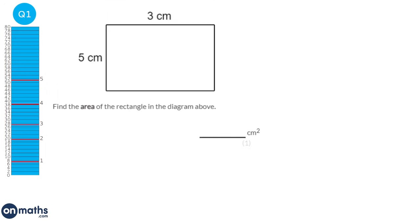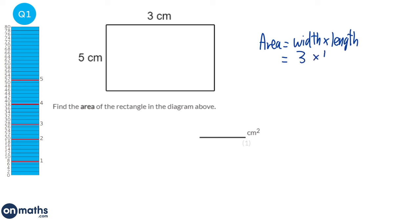The formula for the area of a rectangle is width times length. The width is 3 and the length is 5, therefore the area will be 15. The units of the width and the length are both centimetres, therefore the units will be centimetres squared.